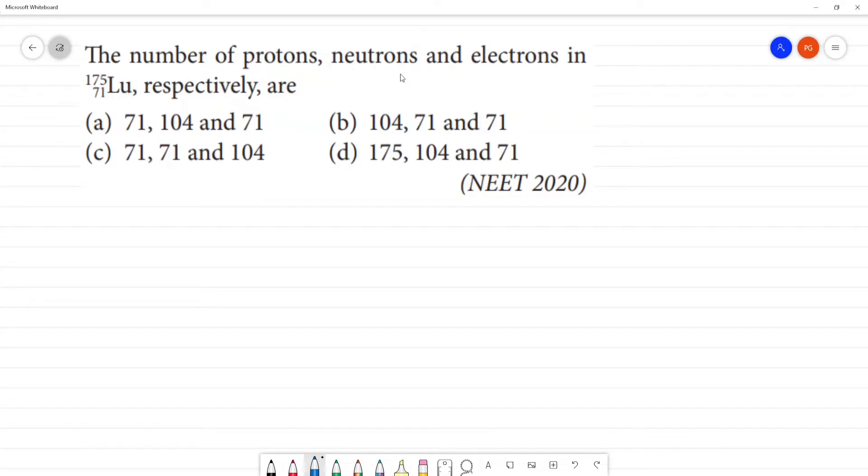The number of protons, neutrons and electrons in Lutetium-71, atomic number 71, mass number 175, respectively. This is one of the easiest questions.